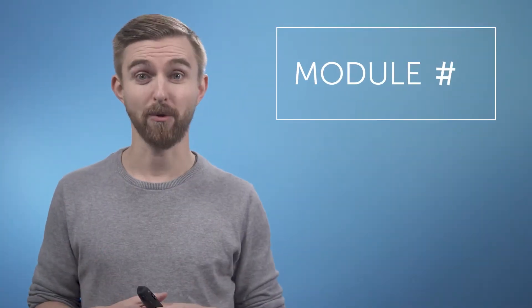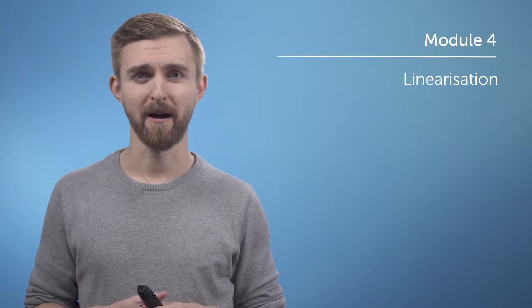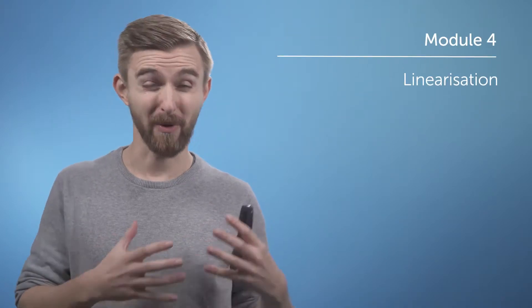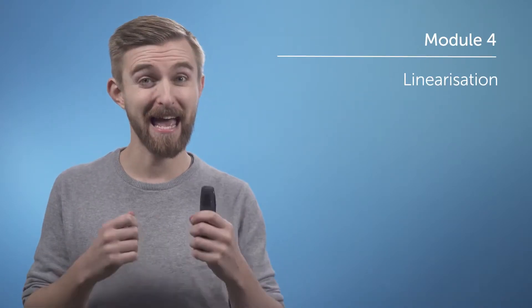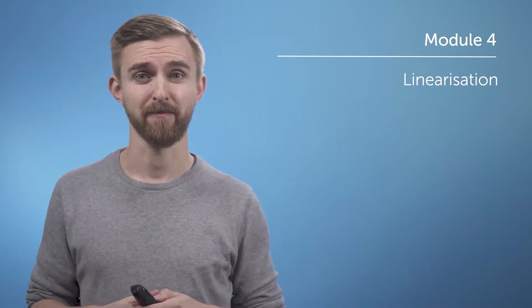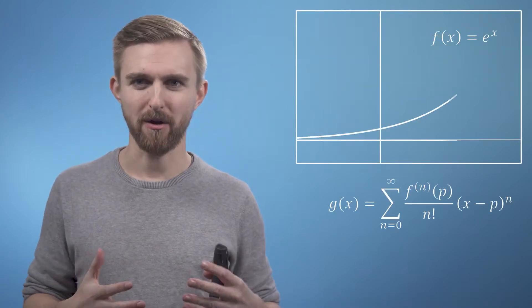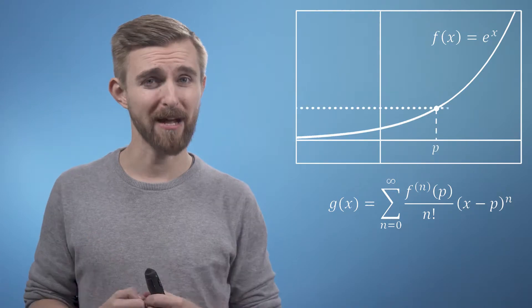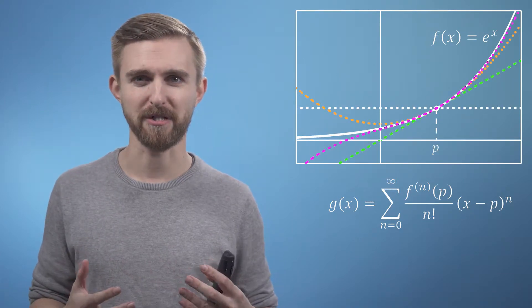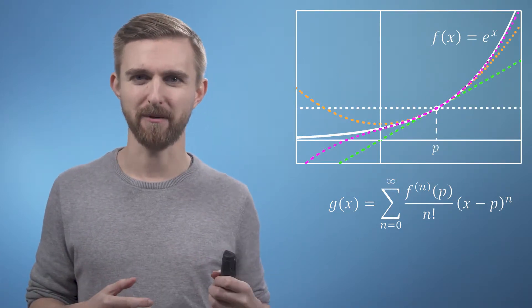In this session we're going to take what we've learned about Taylor series so far and reframe it to a form that will help us understand the expected error in an approximation. As we've already seen, we can build up a sequence of gradually improving approximations to functions by adding higher power terms.